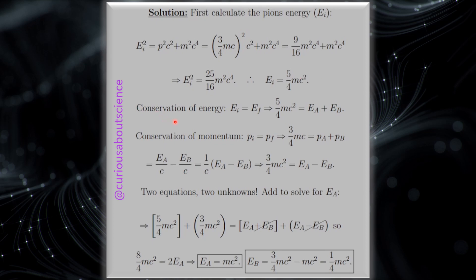Now conservation of energy states that the energy before and after. What we know about the before is that we have 5/4 MC squared. What we know about after is that we have two photons. And this is where we're going to have to be careful, photon A and photon B.